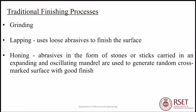Traditional finishing processes include grinding, lapping, and honing. In grinding, a grinding wheel coated with abrasive material interacts with the workpiece, removing material in the form of fine chips. Lapping uses loose abrasives to finish the surface. In honing, abrasives in the form of stones or sticks carried in an expanding and oscillating mandrel generate a random cross-hatched surface with good finish. However, these traditional processes have certain limitations.